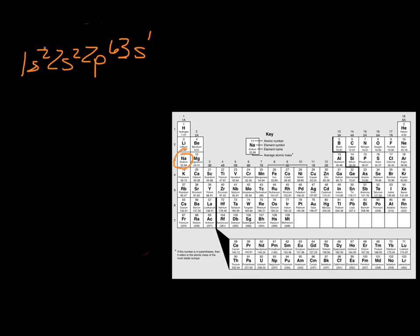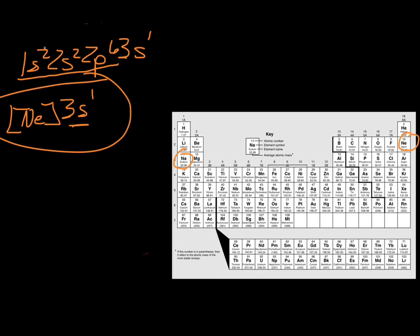If you wanted to write the abbreviated version, we go back and find the nearest noble gas before sodium. Sodium is element number 11. Neon is the nearest noble gas before sodium. So we would write neon 3s1. What it's saying is sodium has an electron configuration just like neon, and you just add a 3s1 to it. This is the abbreviated configuration for sodium.